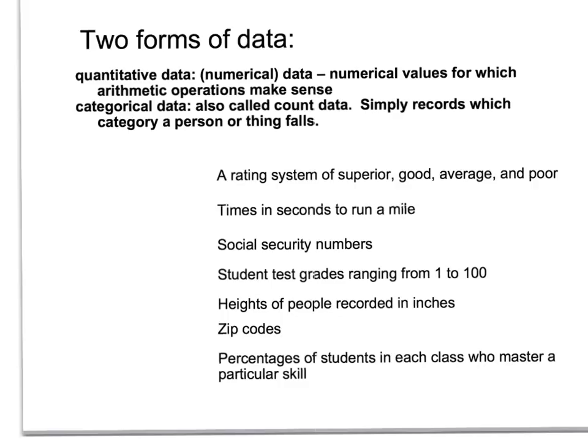Not all numerical data is quantitative. A classic example is area code. 808 is a number; however, it doesn't make any sense to take an average and get 808.5. Even though it's numbers, that is not quantitative — that would be considered categorical data. Categorical data is also called count data. It's simply a matter of putting something in a category and counting them.